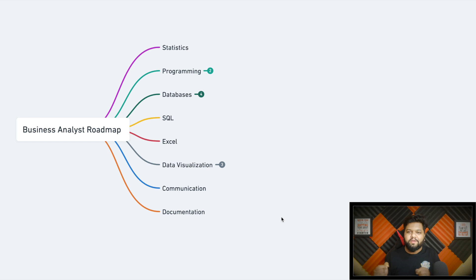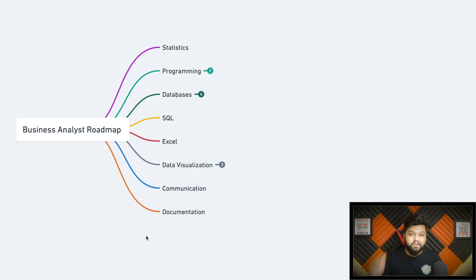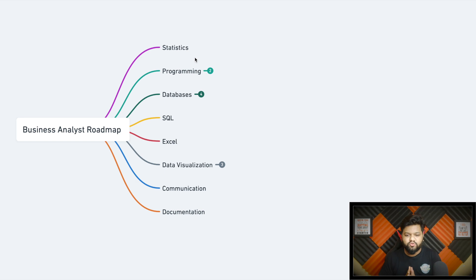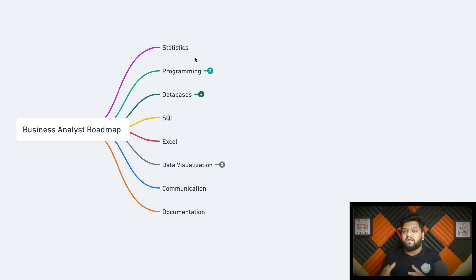Now the crisp roadmap to become a business analyst. If you acquire all these skill sets, I can bet you can crack any company — big consulting, big product-based companies. The first and most important is statistics: calculating average, mean, median, mode, standard deviation, percentage growth, percentage loss, and many other mathematical and stats-related metrics. This understanding is really important when you're working on business metrics from a statistical perspective.